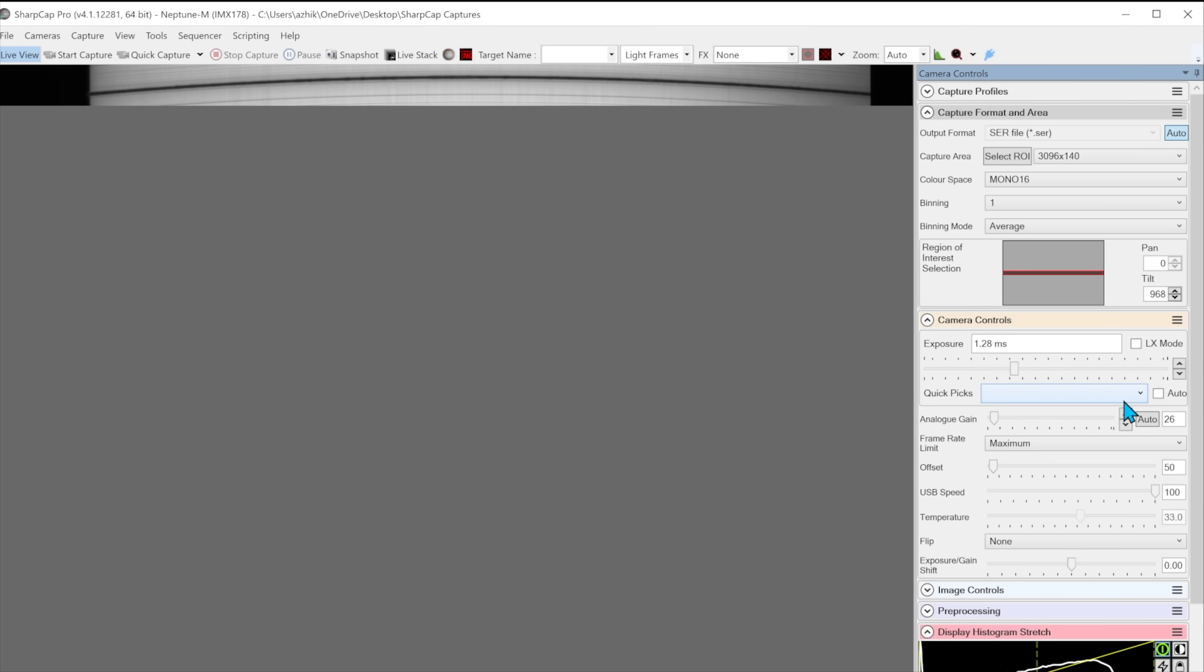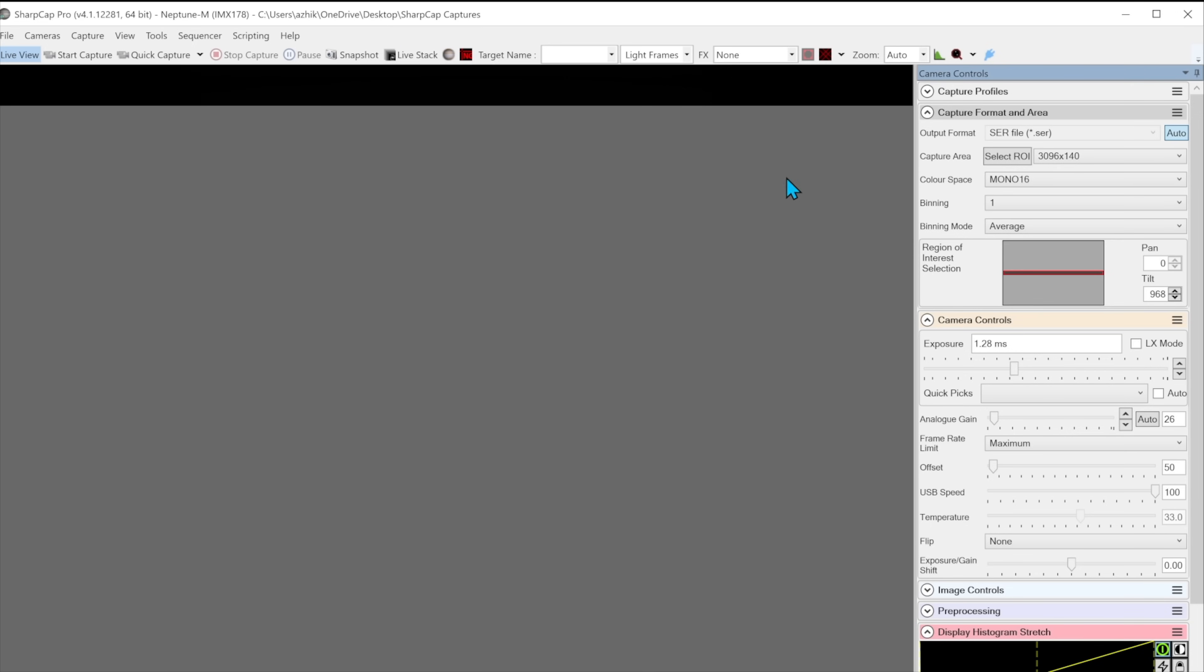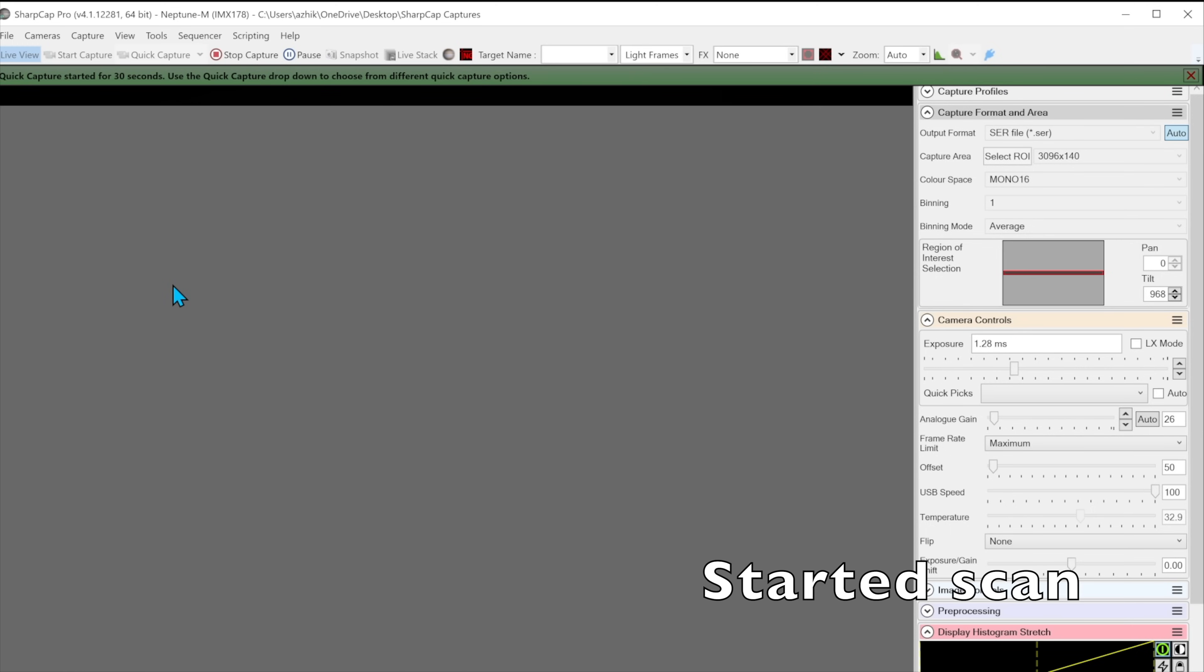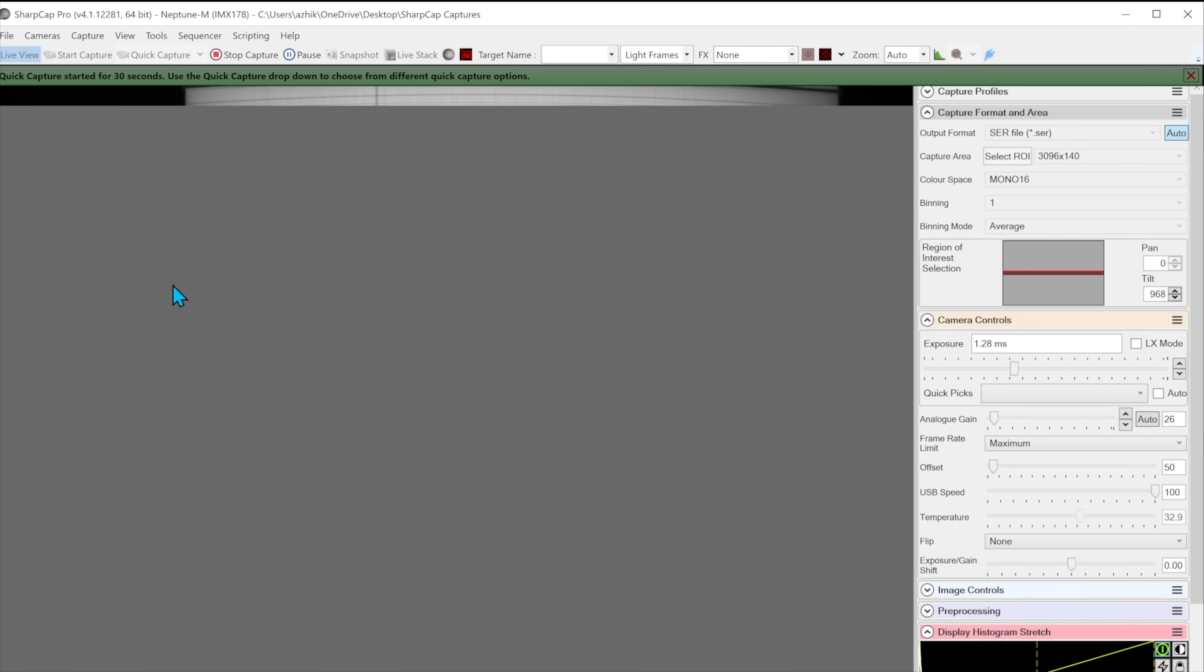For the scan itself, start well before, meaning far left or far right in right ascension so the screen is black, and then continue left or right in RA well past when it returns to black to avoid streaks in your image.